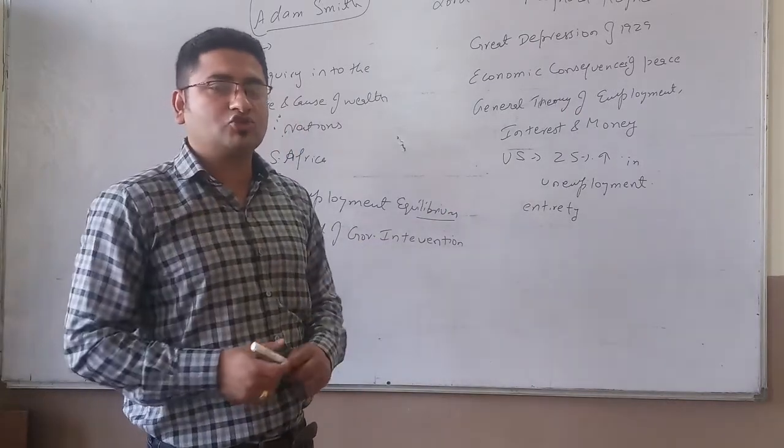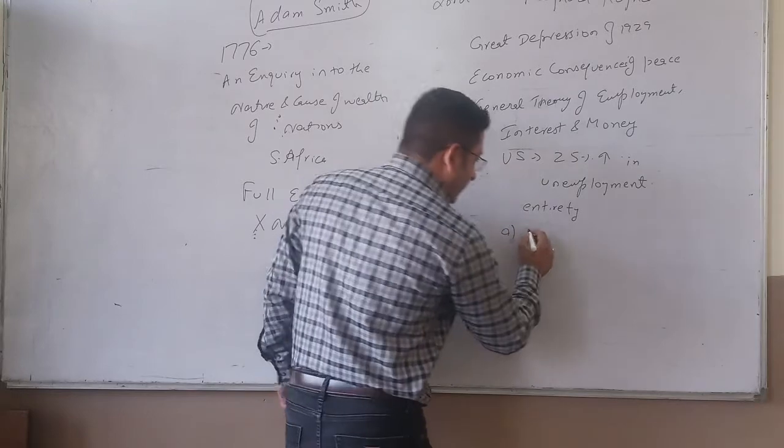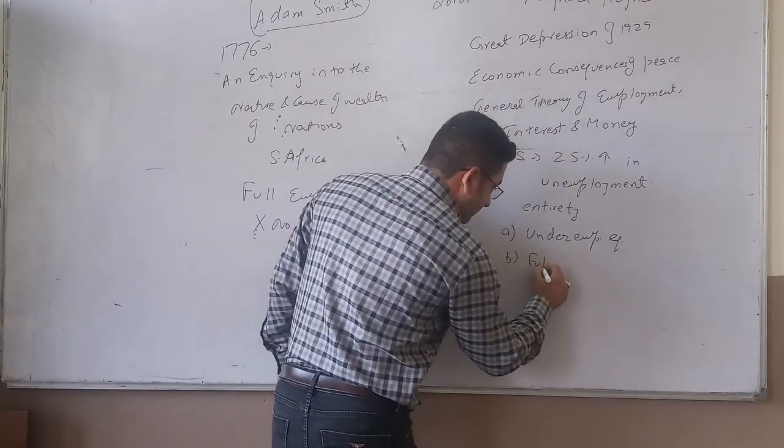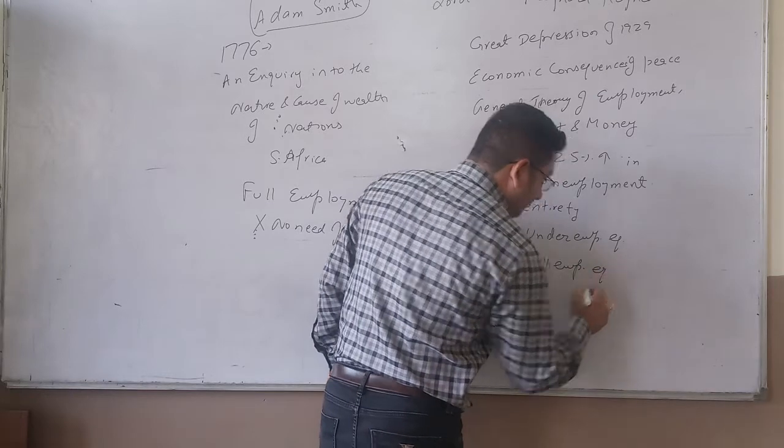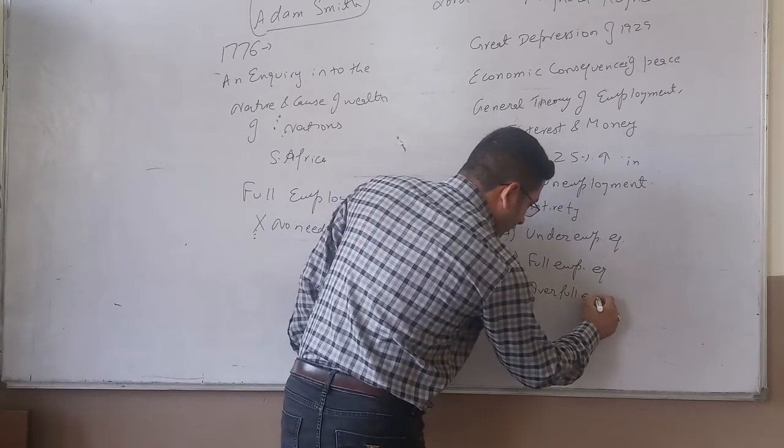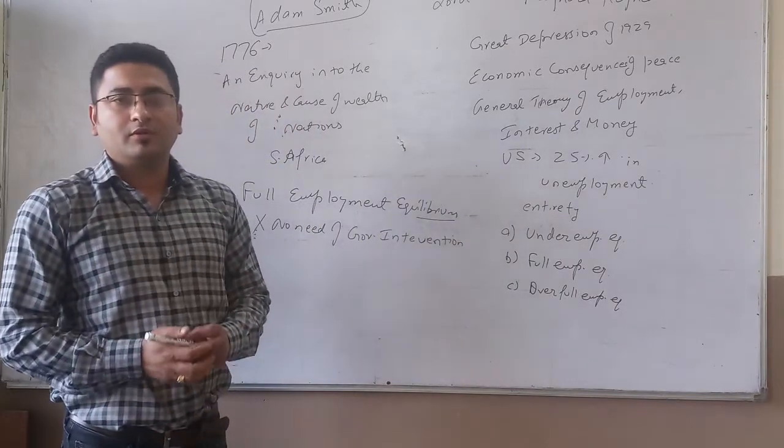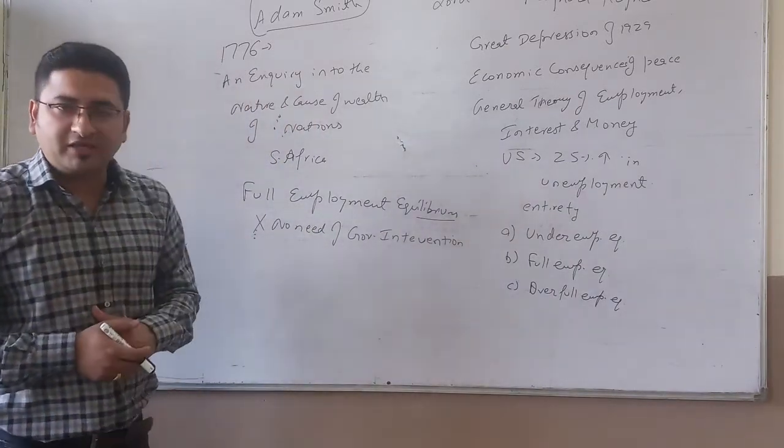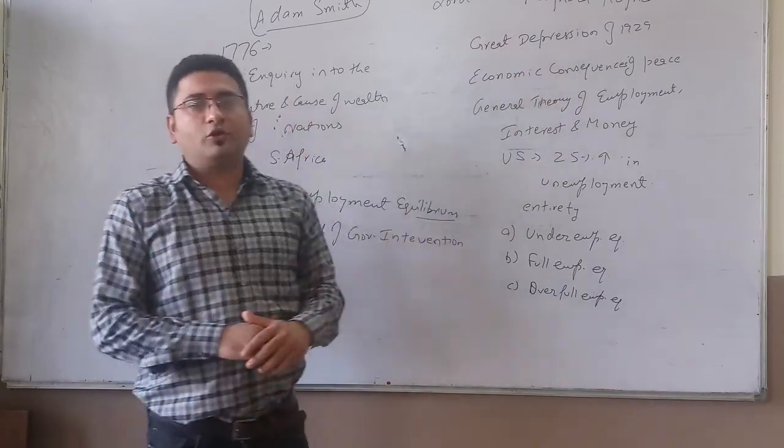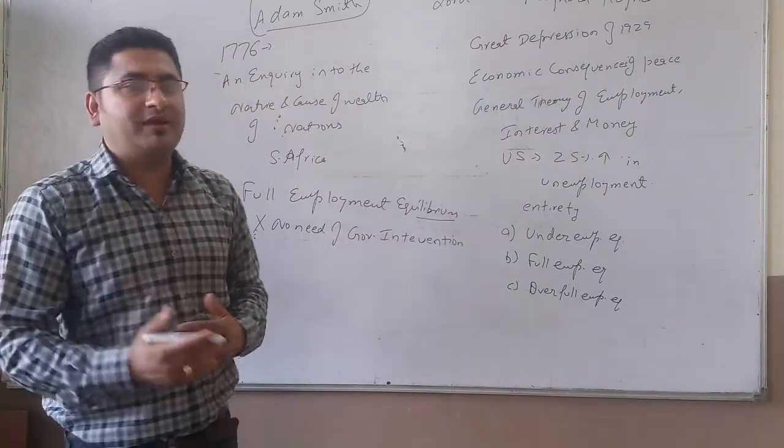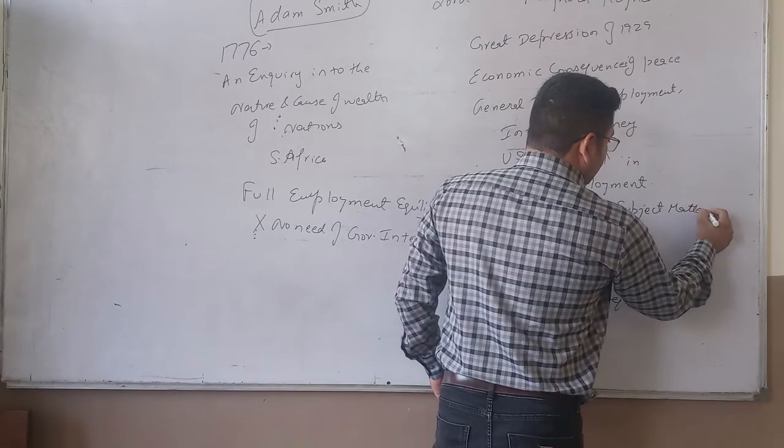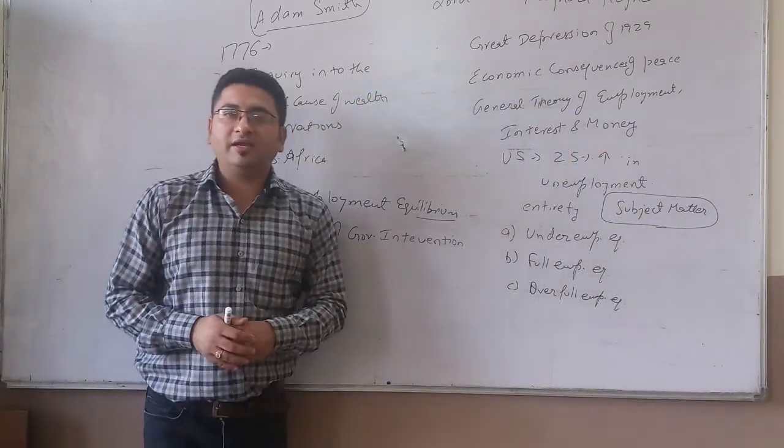Rather, there can be three conditions of equilibrium. The very first was under employment equilibrium. Second was full employment equilibrium. And third was over full employment equilibrium. Getting my point? So, we said that the founding father of macroeconomics was Adam Smith. But, after the theory of Lord J.M. Keynes, the subject matter of macroeconomics was born. So, it was around in 1930s.